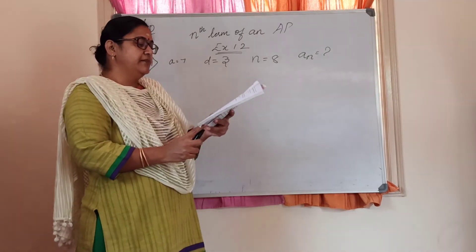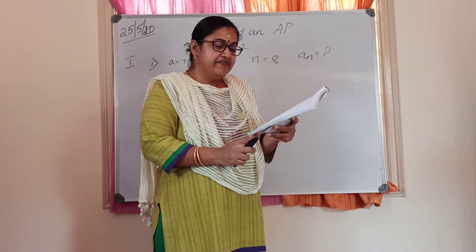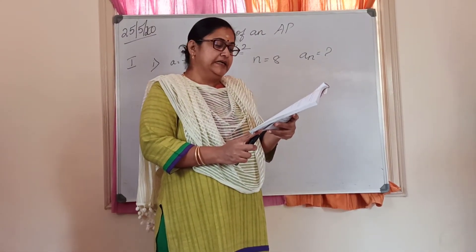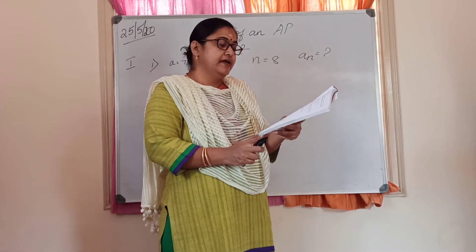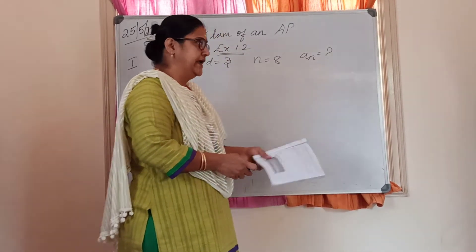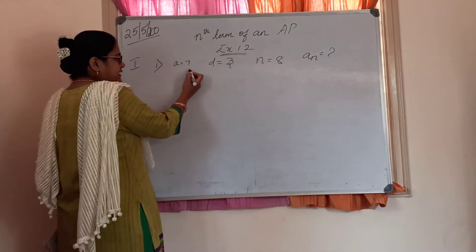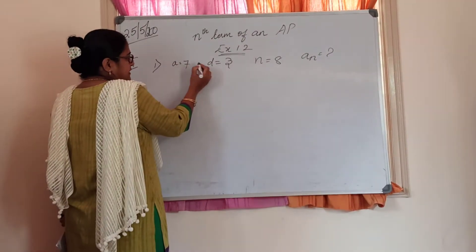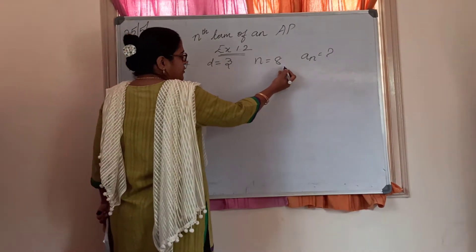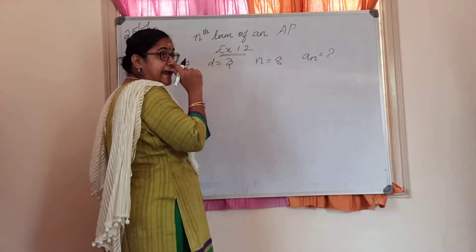Now the first question: fill in the blanks in the following table. Given that A is the first term, D the common difference, and AN the nth term of the AP. They have given you a table. In that, A is given as 7, D value is 3, and N value is 8. You are asked to find the nth term.